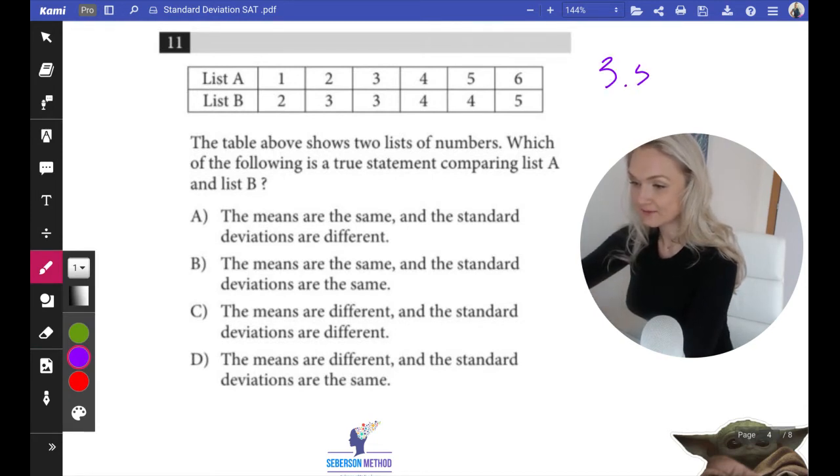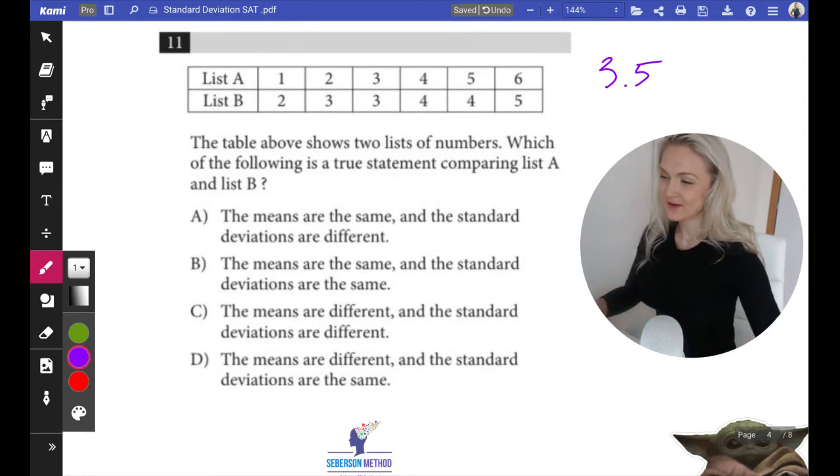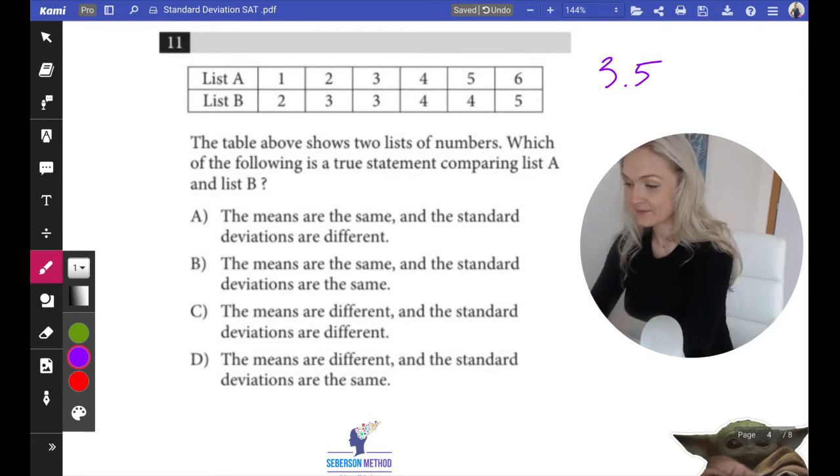For list B, we're going to do the same. We need to add them all up: 2 plus 3 plus 3 plus 4 plus 4 plus 5. That's also 21. We're going to divide it by 6. The mean is going to be the same. So means are the same.